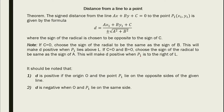The signed distance from the line ax + by + c = 0 to the point (x₁, y₁) is given by the formula: d = (ax₁ + by₁ + c) / (±√(a² + b²)). This is the formula for the distance from a line to a point.